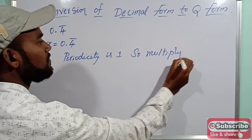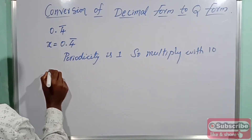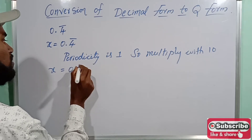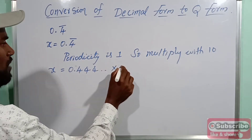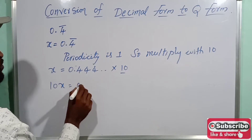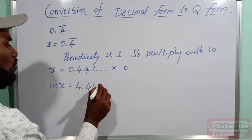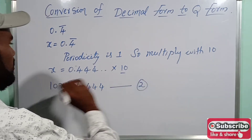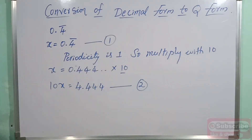So x equals 0.4 bar, which you can write as 0.4444... and so on. We multiply by 10, so 10x equals 4.4444... Consider this as equation 2 and x equals 0.4444... as equation 1. Now we subtract equation 1 from equation 2.